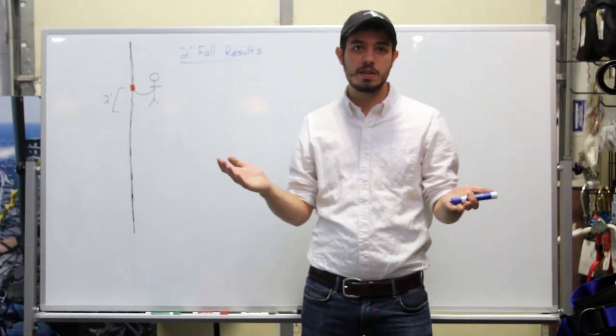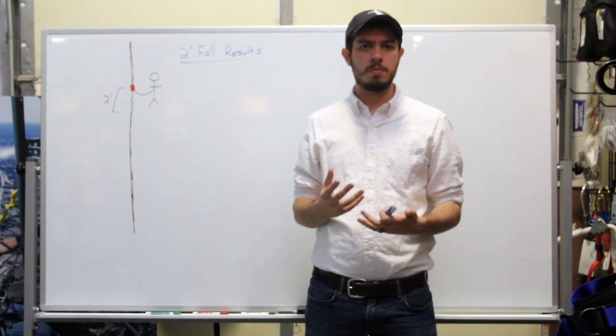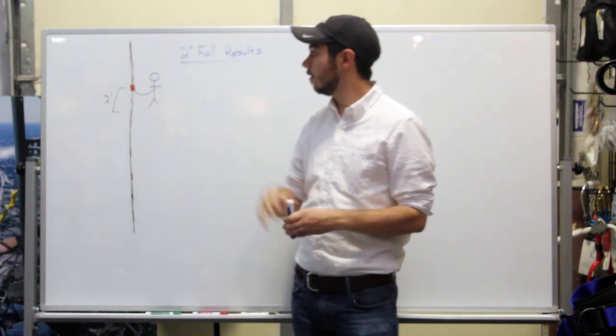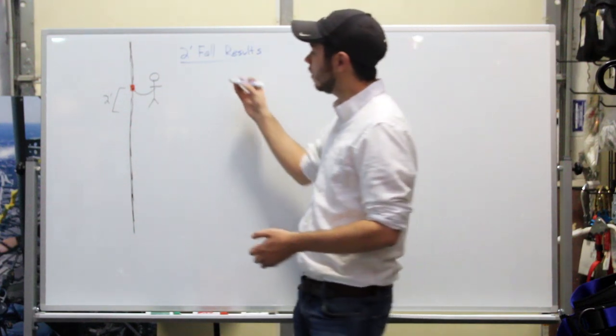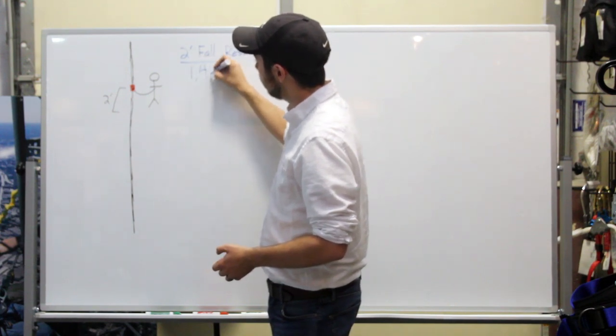Alright, so you just saw the results, and I have to say, the hand ascender as a backup device performed a lot better than any of us thought it would. But, we did it again at a two-foot fall. The force that actually ended up being generated was right about 1,400 pounds of force. Just a little bit more than that. So we ended up with 1,400 pounds.